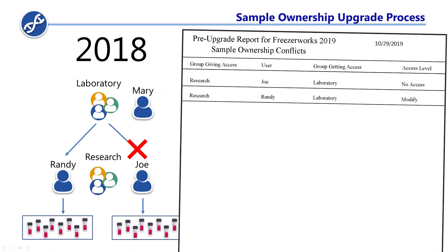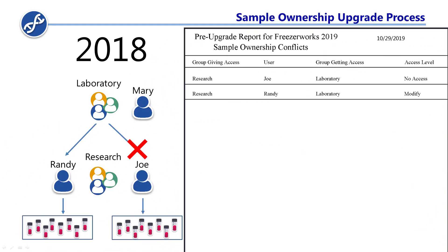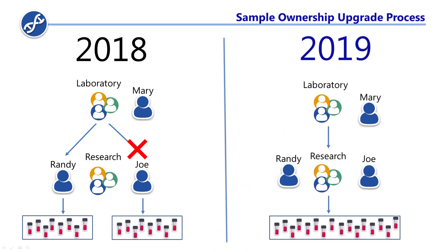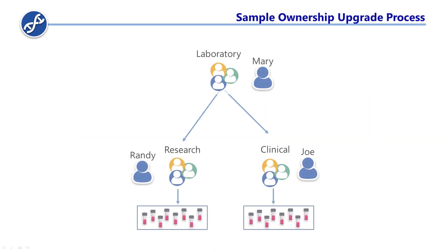During the upgrade, you will receive a pre-upgrade report listing every conflict, so you can return to 2018 and either fix them or plan for the changes. In this previous example, to fix the conflict and maintain the same security, we'd need to create a new group in 2018 that user Joe is a part of.